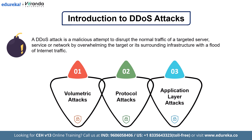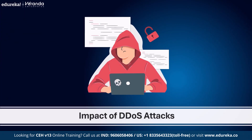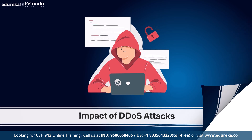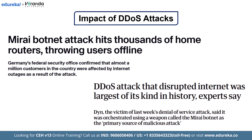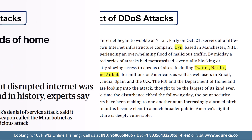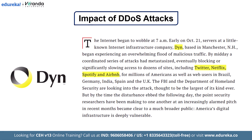Now that we understand what a DDoS attack is, let's look at just how much damage it can cause in the real world. Back in 2016, one of the most powerful DDoS attacks in history was launched using the Mirai botnet. This attack targeted a company called Dyn, which provides DNS services that help route internet traffic. By flooding DNS servers with an enormous amount of traffic, it caused major websites like Twitter, Netflix, and Reddit to go offline for hours.